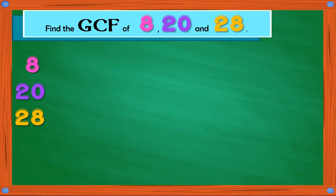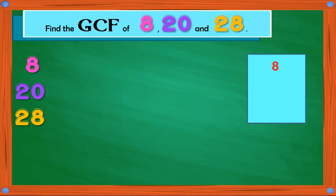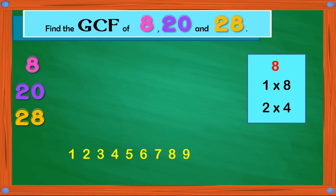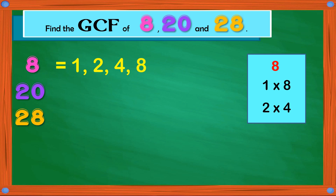Now, given 3 numbers, let's find the greatest common factor of 8, 20, and 28. Let's start with 8. Using the counting numbers 1 to 9, we have 1 times 8 is 8, 2 times 4 is 8. 8 is not divisible by 3; 4 times 2 is the same as 2 times 4. 8 is not divisible by 5, not divisible by 6, not divisible by 7. 1 times 8 is the same as 8 times 1, and 8 is not divisible by 9. So the factors of 8 are 1, 2, 4, and 8.